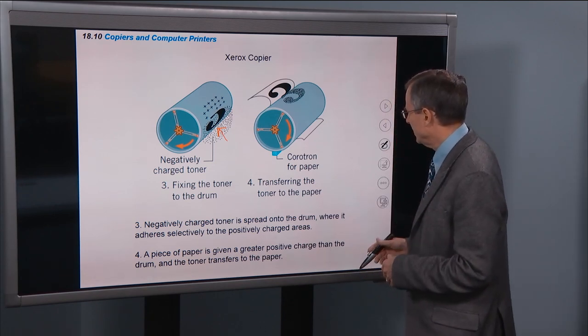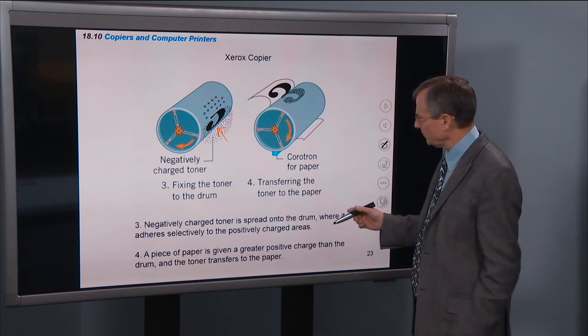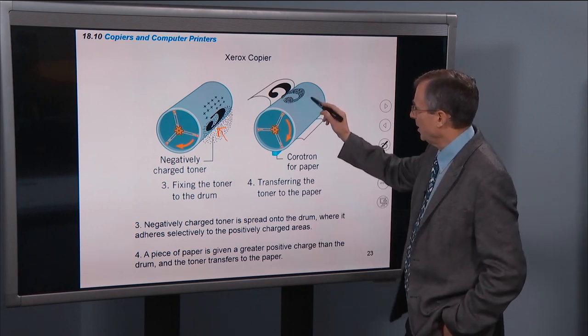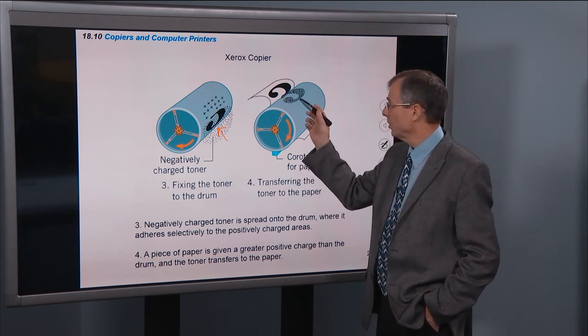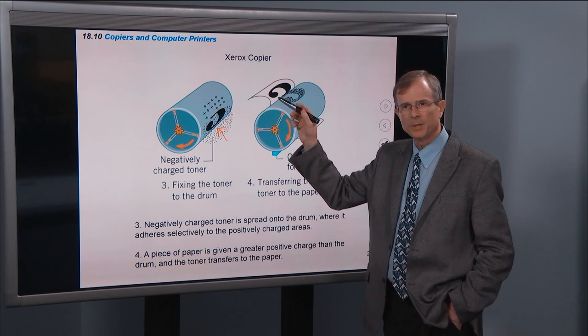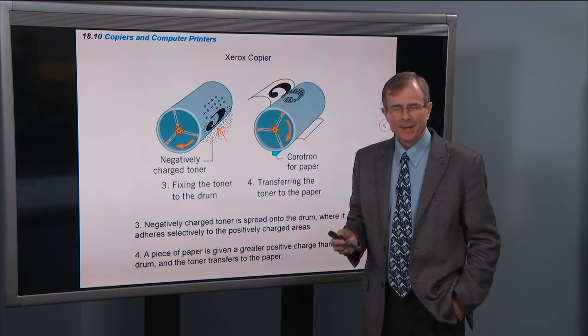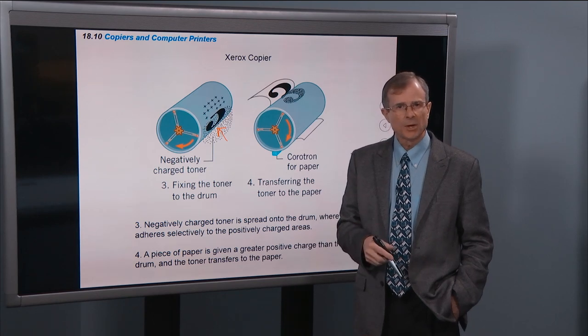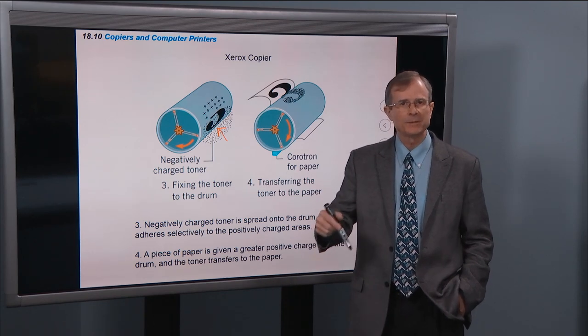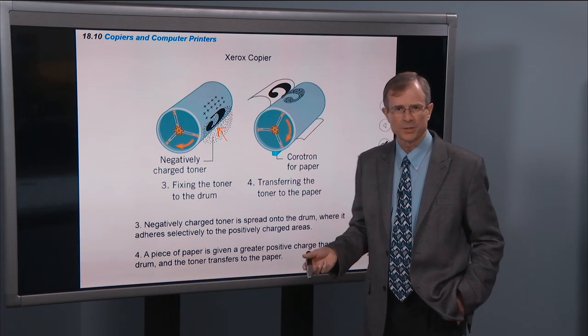And the next step then is to put the paper up on it and try and get the paper, the toner to go from the drum to the paper. Problem. If the paper is electrically neutral, it's not going to be able to attract that toner. Because the toner being negatively charged is attracted to the positively charged drum.